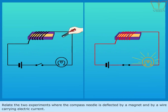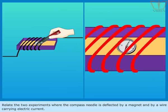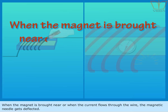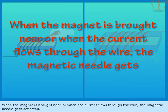Relate the two experiments where the compass needle is deflected by a magnet and by a wire carrying electric current. When the magnet is brought near or when the current flows through the wire, the magnetic needle gets deflected.